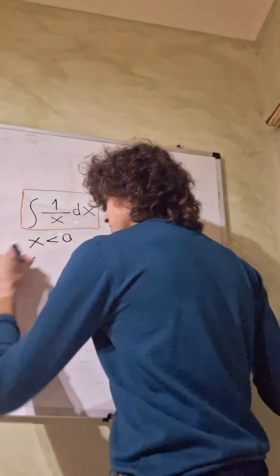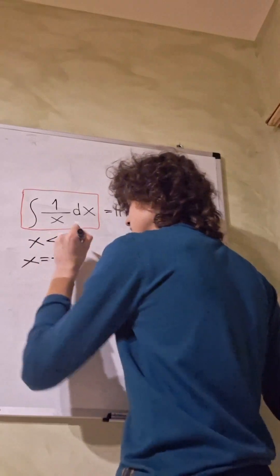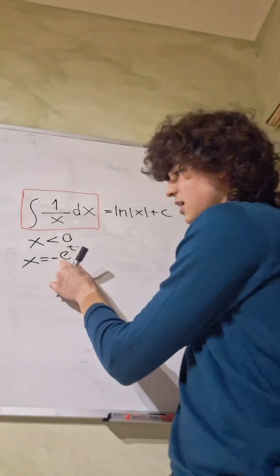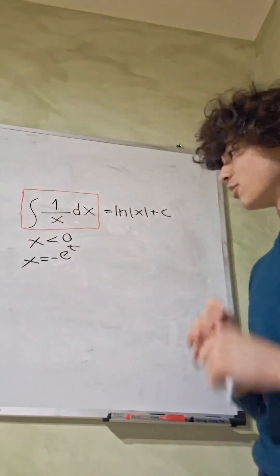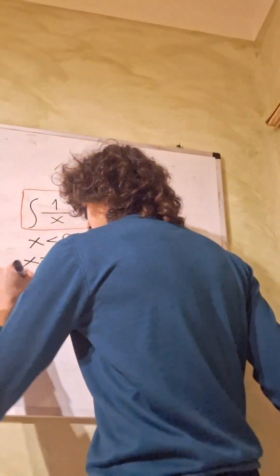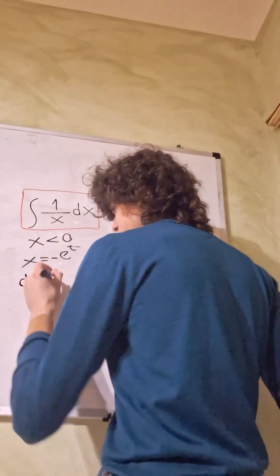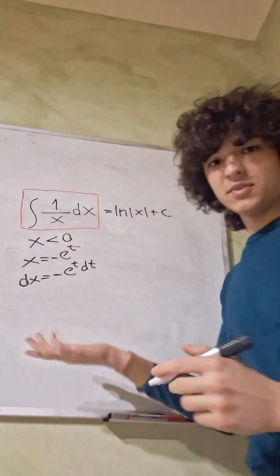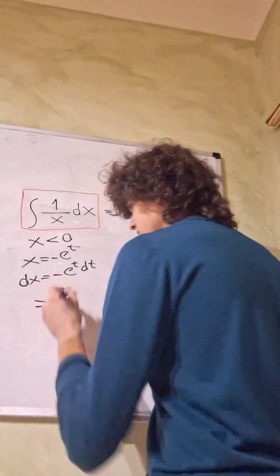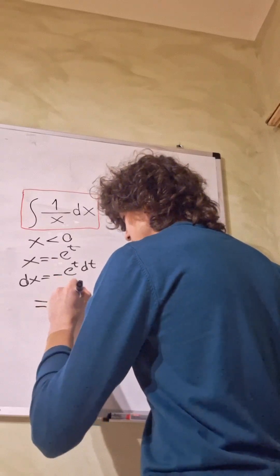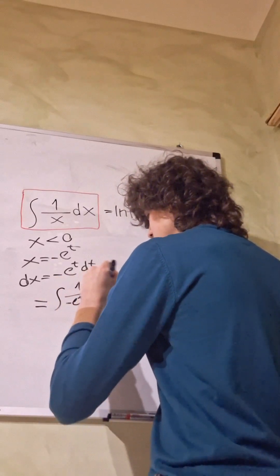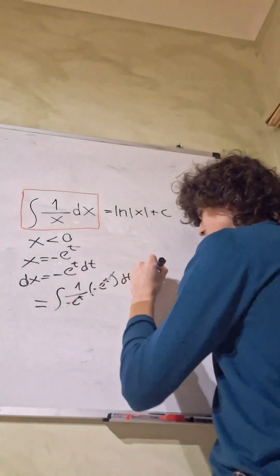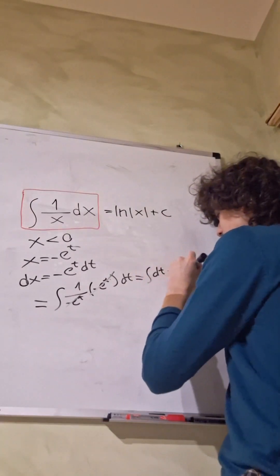We're going to do the following substitution: x equals minus e^t. Remember that now x is less than zero, so e^t is positive, and we have a minus sign, so it all works perfectly. Taking the derivative on both sides gives minus e^t dt. We substitute this back into our integral: the integral of 1 over (minus e^t) times (minus e^t dt). We can simplify and get back to the integral of 1 dt, which equals t plus c.